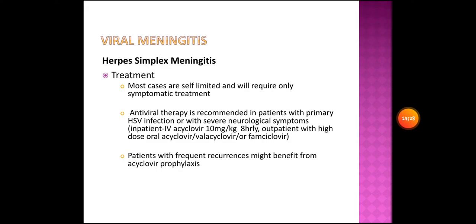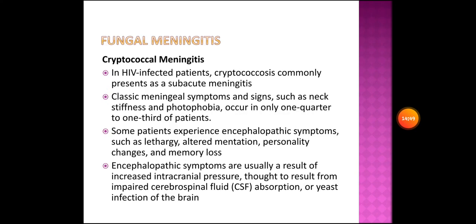Most cases of herpes simplex meningitis are self-limited and require only symptomatic treatment. Antiviral therapy is recommended in patients with primary HSV infection or with severe neurologic symptoms. Give IV acyclovir 10 mg/kg every 8 hours; outpatients receive high-dose oral acyclovir or valacyclovir. Patients with frequent recurrences might benefit from acyclovir prophylaxis.